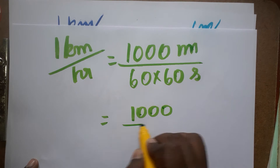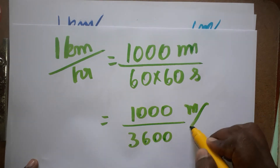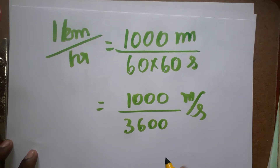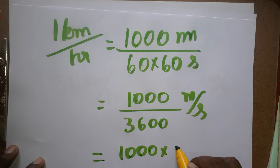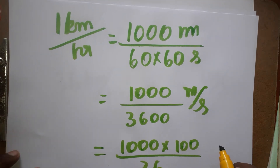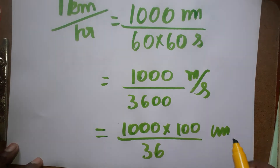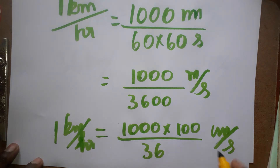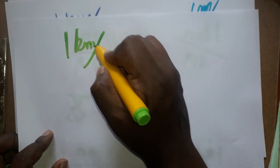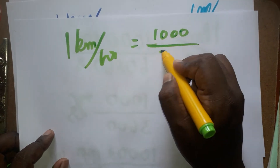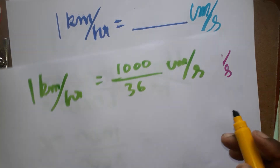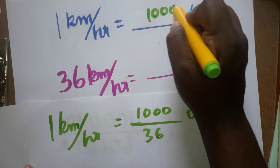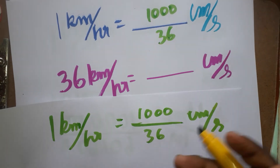So it is thousand divided by 3600 meter per second. Now meter to centimeter: 1 meter is 100 centimeters. So thousand into 100 divided by 3600. The meter is converted into centimeter, so centimeter per second. These two zeros get cancelled, so 1000 divided by 36. So 1 kilometer per hour is equal to 1000 divided by 36 centimeter per second. Because 3600, two zeros get cancelled.